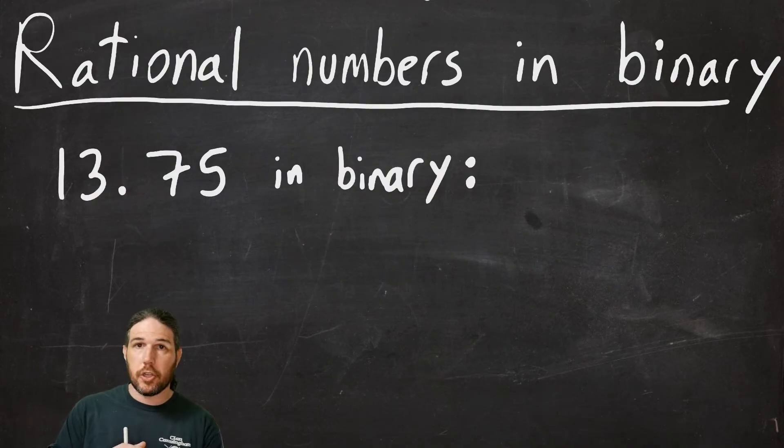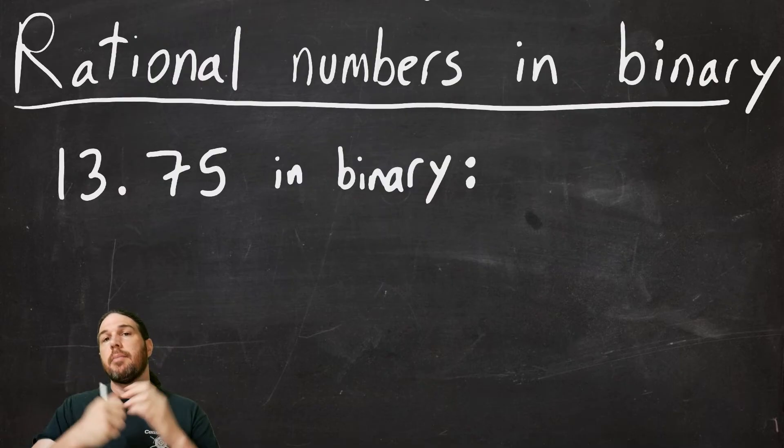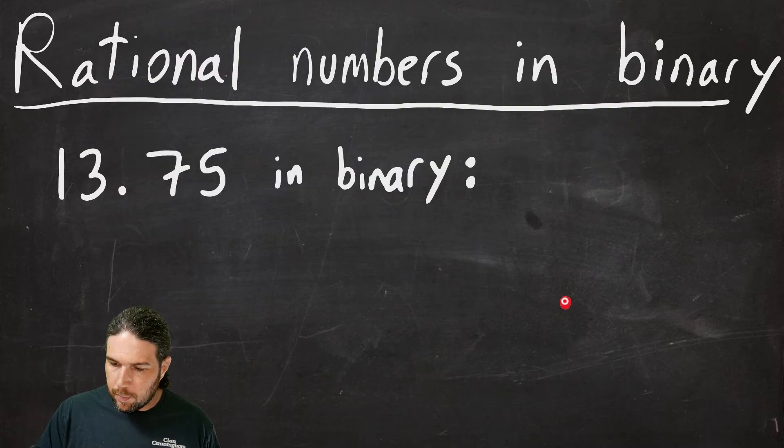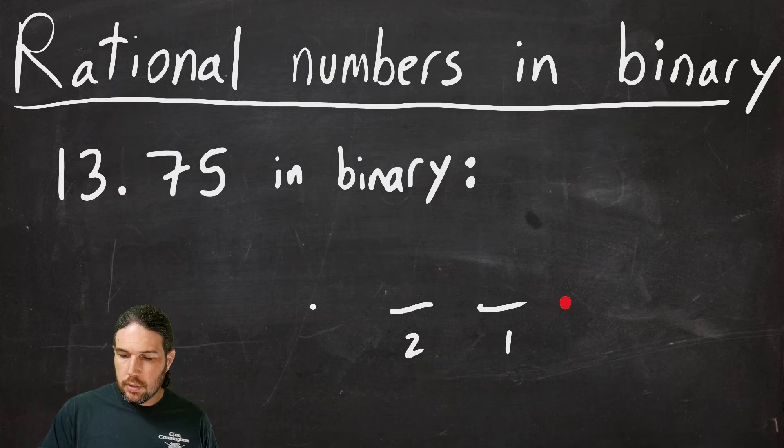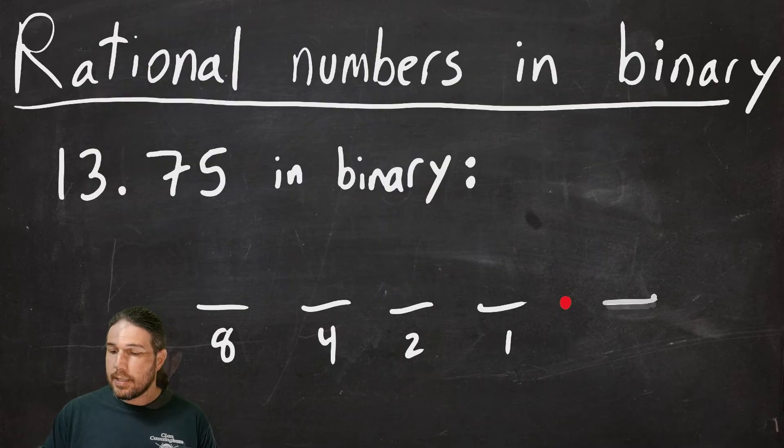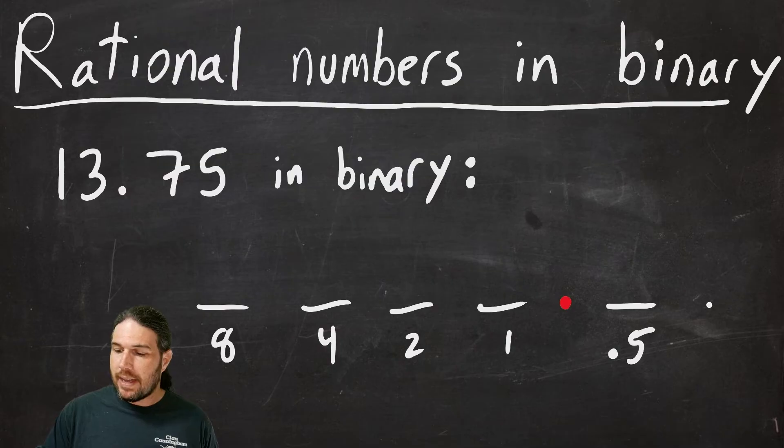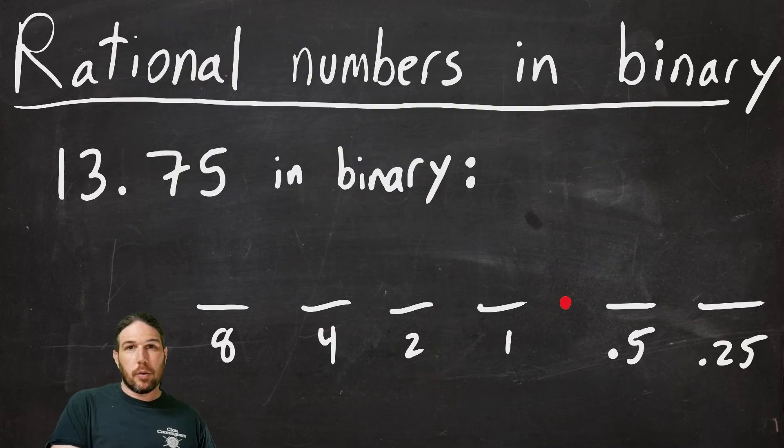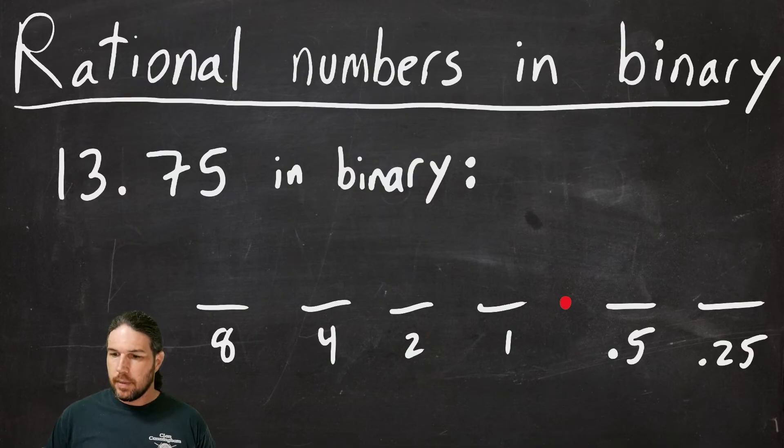A couple of examples before we finish up this video. What if we wanted to put 13.75 in binary? Just like with decimal numbers, the place where we kind of center our efforts is the decimal point. To the left of the decimal point, we have one, two, four, and eight, same as always. And then to the right, we've got one half, which is the same thing as 0.5, and one fourth, which is the same thing as 0.25. We could keep going, but I don't think we're going to need to. Let's go ahead and split this up into two pieces, the whole number part and then the sort of partial number part, the decimal part.